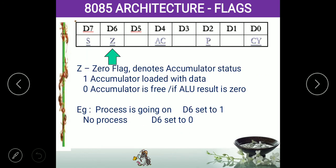The next flag is the zero flag. The zero flag is used to indicate the status of the processor. If the zero flag is 1, it indicates the accumulator is full — the processor is doing some operation. If the flag is 0, the accumulator is free, there is no data, and it is ready to accept data — the processor is free. If it is 1, the amber light glows. If it is 0, the amber light on the CPU or laptop will not glow.